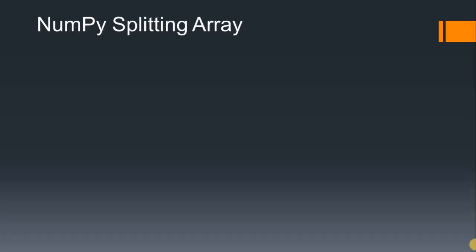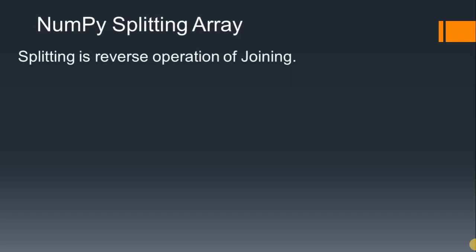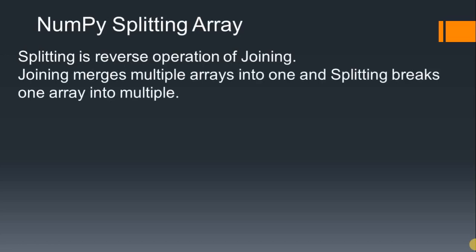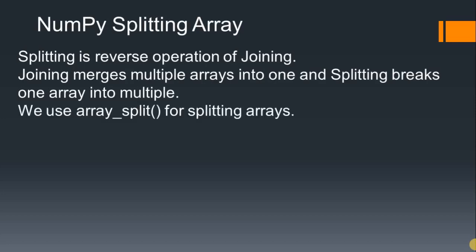Hello guys, today we will see the NumPy splitting array concept in Python. In the last tutorial we covered joining, and splitting is just the reverse of joining. In NumPy, splitting is the reverse operation of joining — joining merges multiple arrays into one, while splitting breaks one array into multiple parts. For that we use the array_split function.